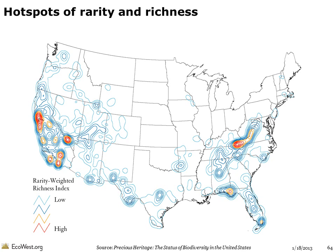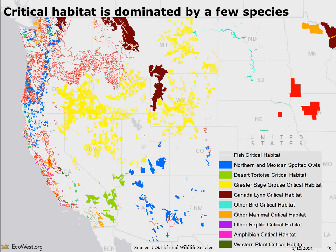Another biodiversity measure, the Rarity Weighted Richness Index, combines both biodiversity and the rarity of species. Many of the hotspots are in California, though the Southwest also ranks relatively high. Back East, there are hotspots of rarity and richness in Appalachia and Florida. Another way to look at the geography of endangered species is to examine a map of critical habitat — areas considered especially important for the recovery of listed plants and animals. These areas are designated under the ESA and can face additional regulations. A handful of species, such as the spotted owl, desert tortoise, greater sage-grouse, and Canada lynx, account for much of the critical habitat in the West. Most of the fish critical habitat is for salmon and trout.